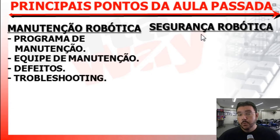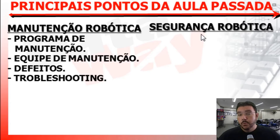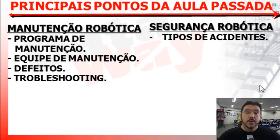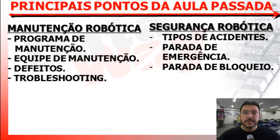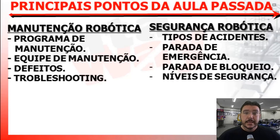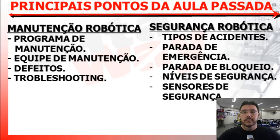Falamos também de segurança robótica, concluindo assim toda a matéria. Dentro de segurança robótica, nós vimos os tipos de acidentes, as paradas de emergência e de bloqueio — vimos as diferenças entre elas —, os níveis de segurança e os sensores de segurança. Esses foram os principais pontos abordados na aula passada, fechando a segunda etapa do nosso curso de robótica, que é a parte de robótica industrial.